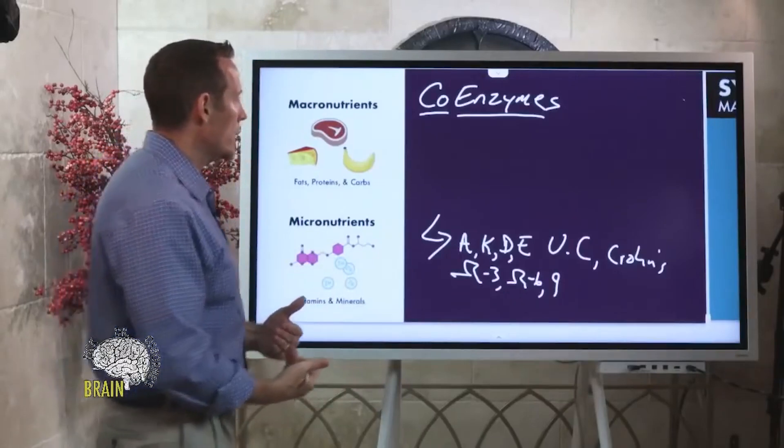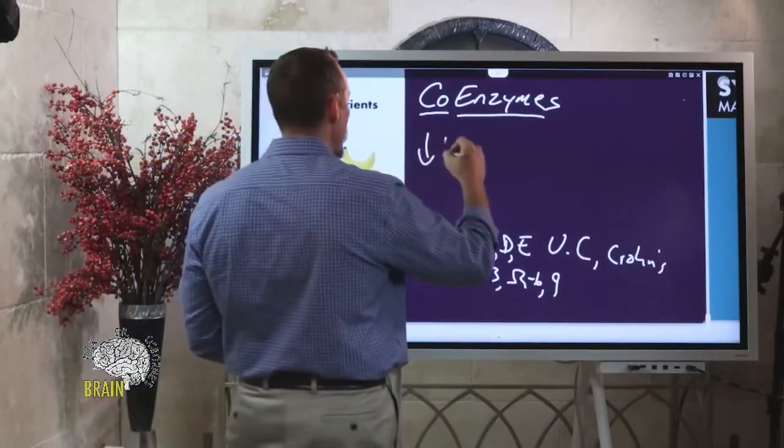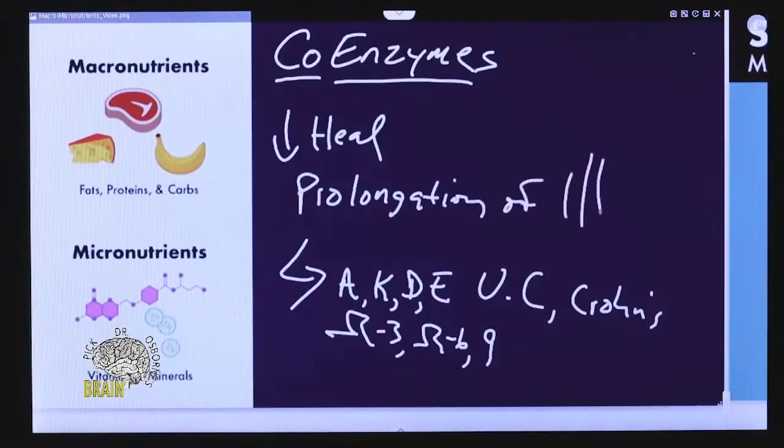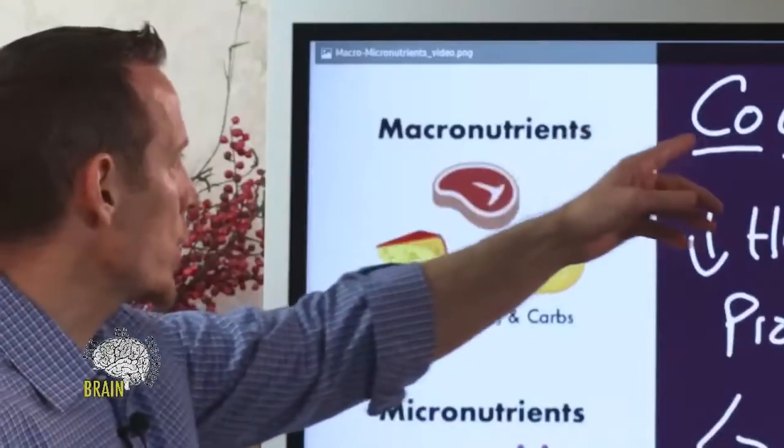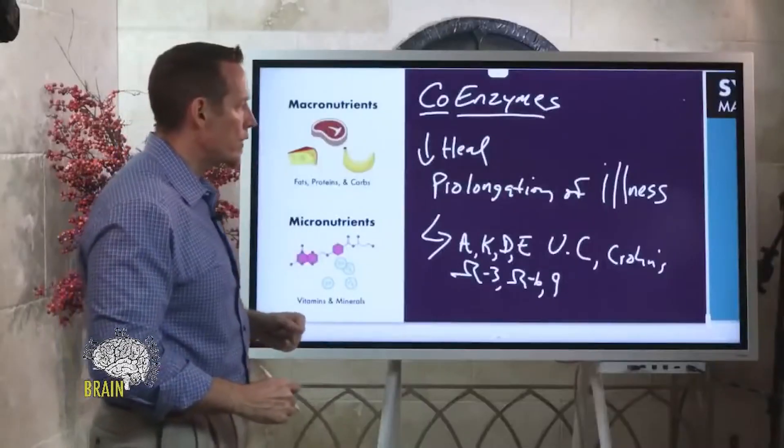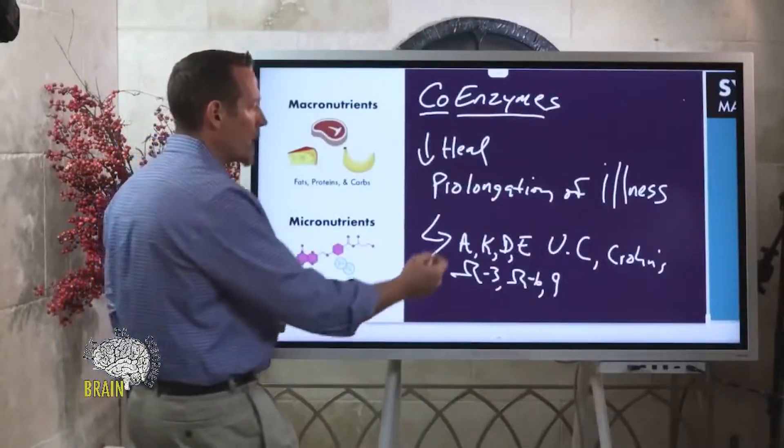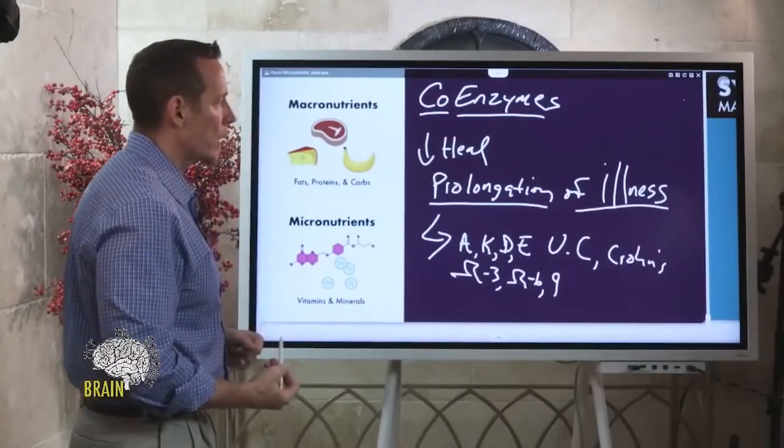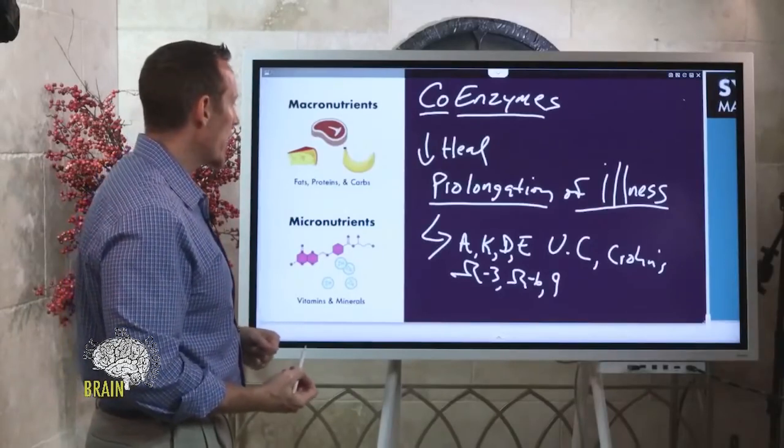Without micronutrients, you're not going to heal, so you have reduction in the ability to heal. What does that typically look like clinically? It looks like prolongation of illness despite diet change. That's why we're talking about this tonight. If you've changed your diet and you're still struggling but haven't addressed whether or not you have a malabsorption problem leading to micronutrient deficiencies, then it wouldn't surprise me if you're still struggling to find a path to wellness.